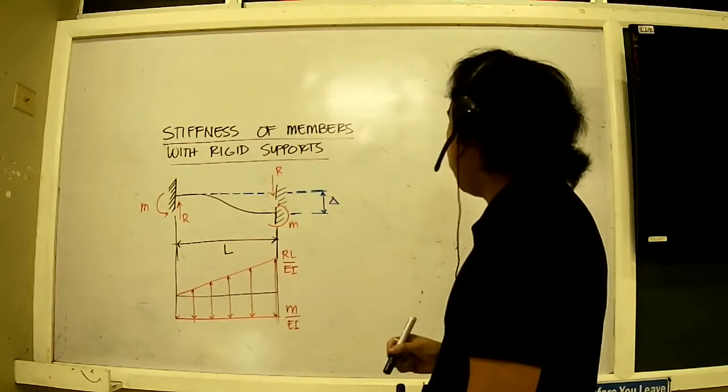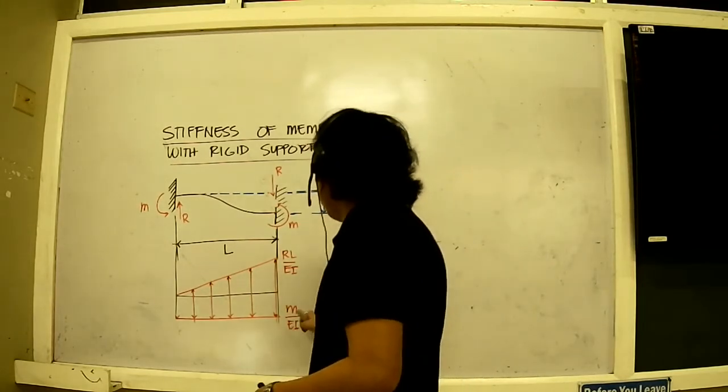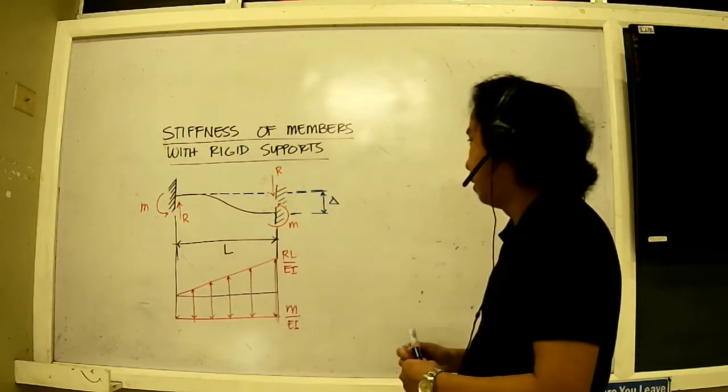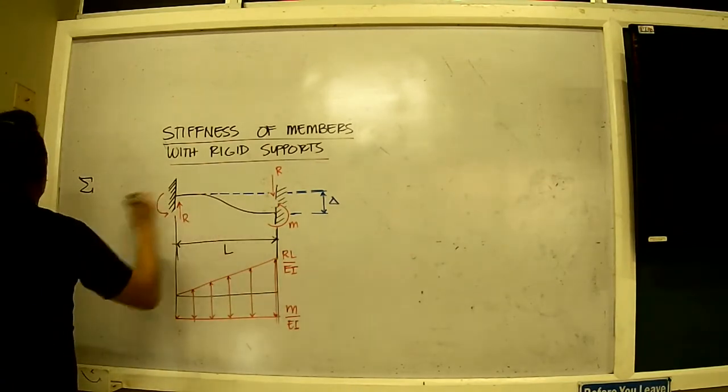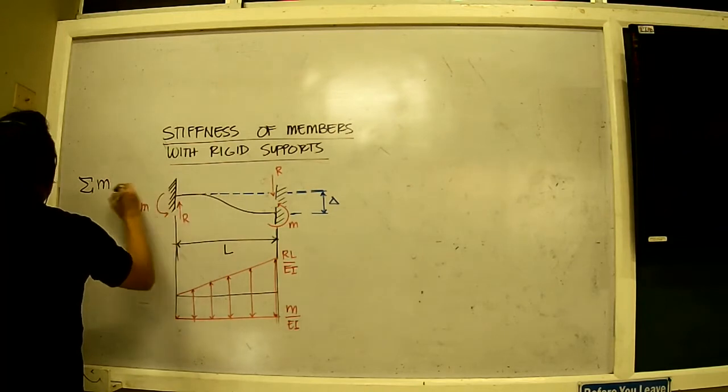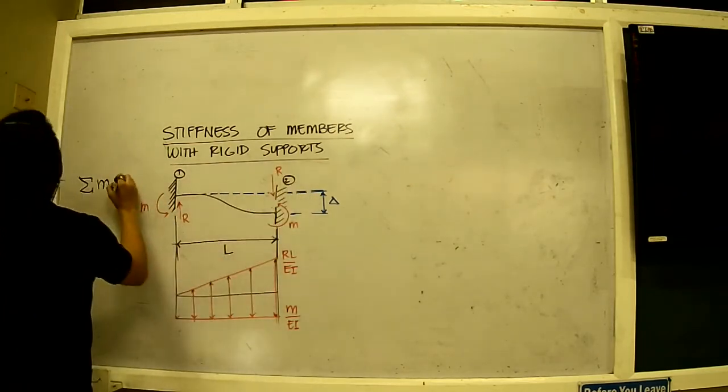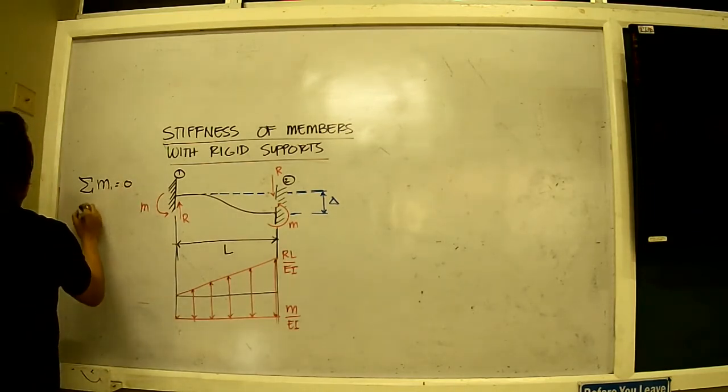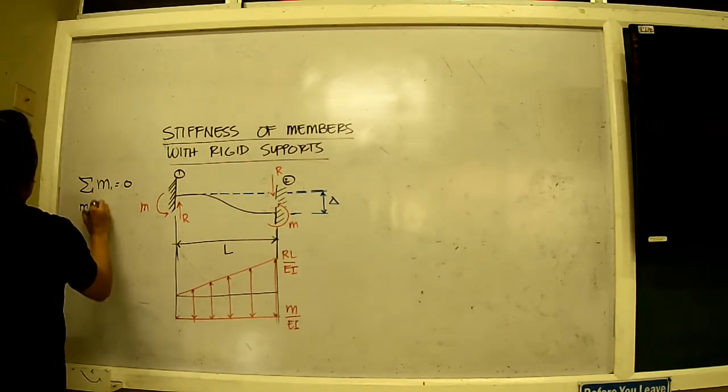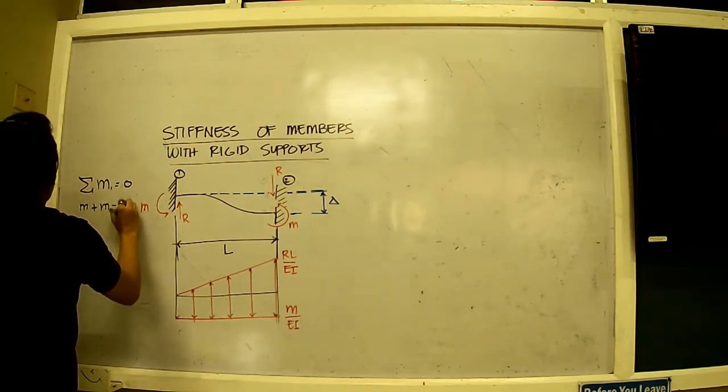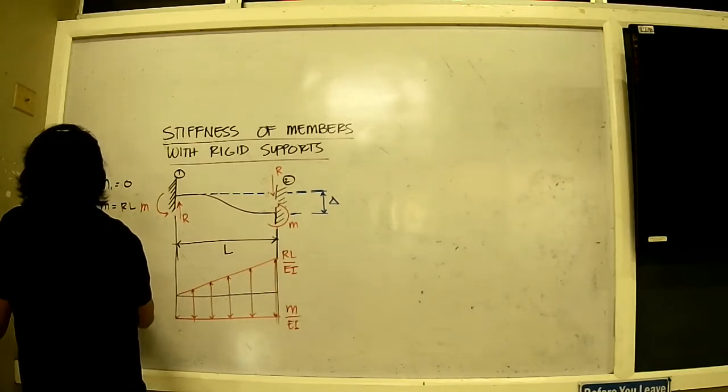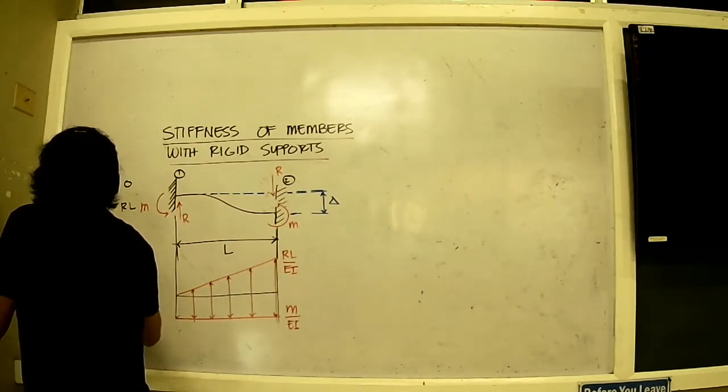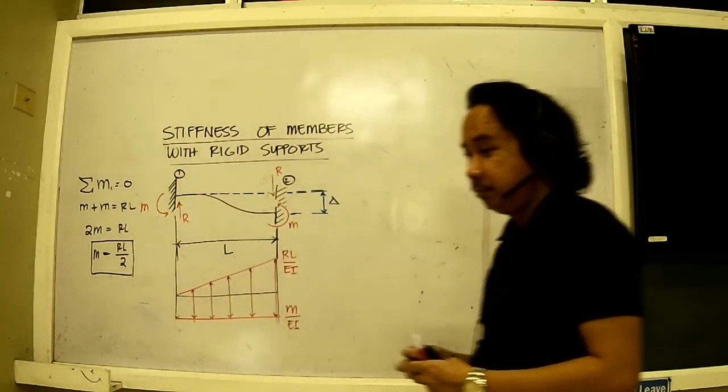Now I also have a problem. I would like to present moment in terms of R. So I try to do this. I go with equilibrium. For this figure here, moment at this point here, I'll just call this as point 1 and this is point 2. Moment at point 1 is equal to 0. So that means M plus M is equal to R times L. So in this case, we have 2M is equal to RL. M consequently is equal to RL over 2. So this is our moment here.